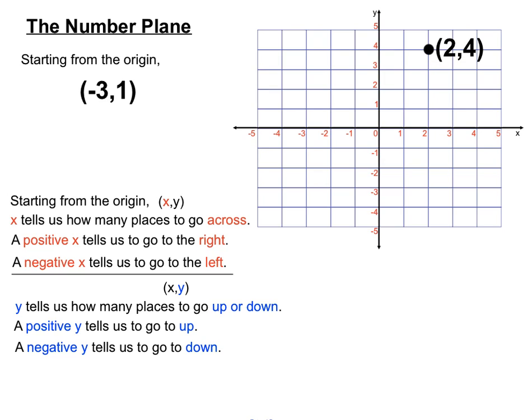So we're going across to the right and up 4 places. Now if we are trying to locate the point on the number plane described by the ordered pair, minus 3, 1. Now that first digit, that x value is a negative.